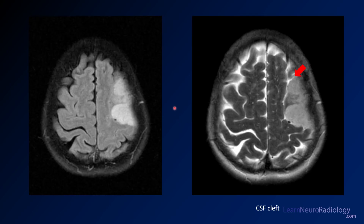Here you see the FLAIR image we saw before, showing this extra-axial mass along the left convexity. On the T2 you can make out the CSF cleft — the CSF space between the tumor and the adjacent brain — which indicates you're probably looking at an extra-axial mass. Here you also see a dural vein that's probably displaced away from the calvarium, again suggesting an extra-axial mass.